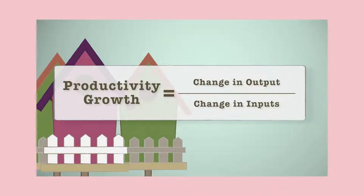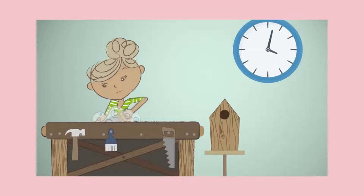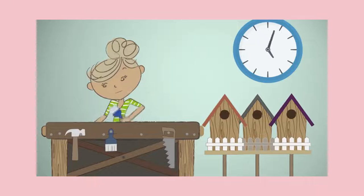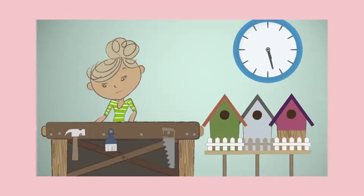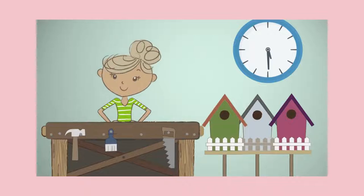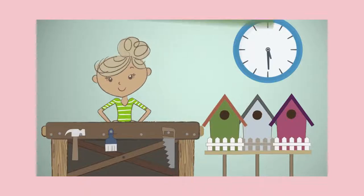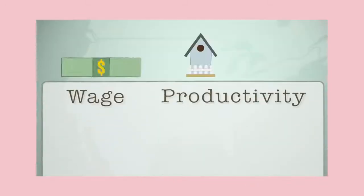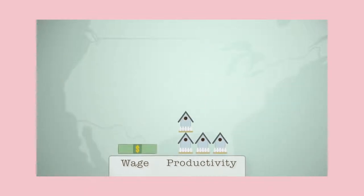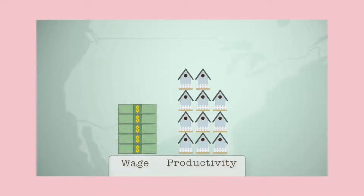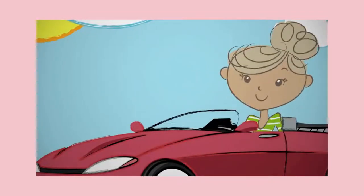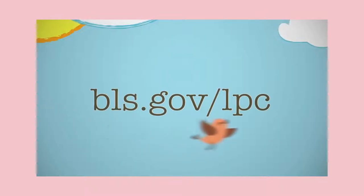Growth in productivity is measured by dividing the change in output over time by the change in inputs over time. Beth could decide to stop working after she makes three birdhouses — if she produces the same output as before with fewer inputs, such as working fewer hours, then her productivity still increases. Increases in productivity allow Beth to either produce more output or have more free time, improving her standard of living. Similarly, the standard of living for a country depends on improvement in overall productivity. Historically, productivity growth has led to higher wages for workers and higher profits for businesses.